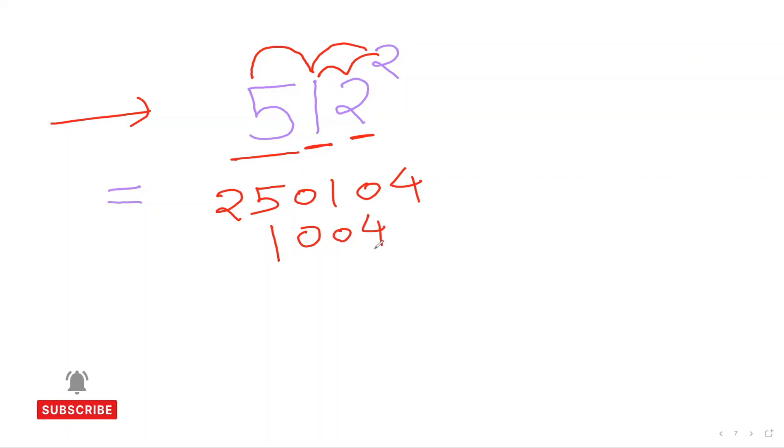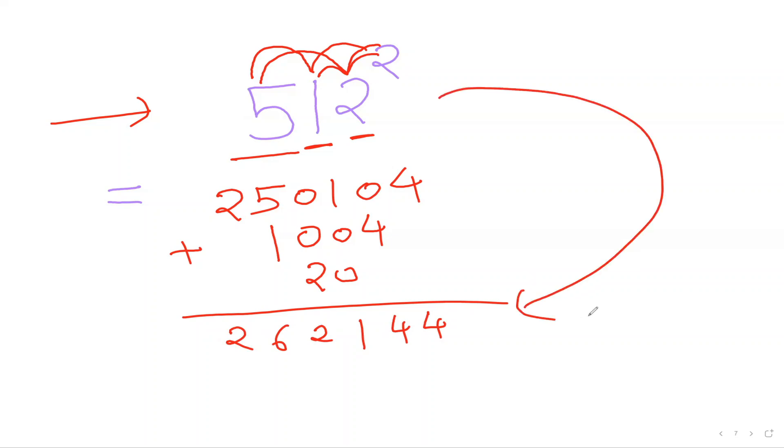And now one last step, guys. And we are nearly done. So now I'll be just connecting first and last. So 5 times 2, which is 10. And 10 times 2, which is 20. And that I'll write down exactly in the middle, guys. And now we got to just add up everything. So that is going to be my 4, 4, 1, 2, 6 and 2. So 262,144 is the square of 512, guys.